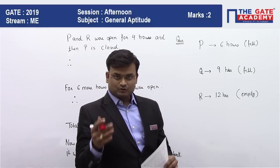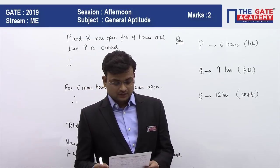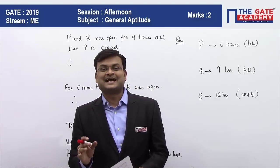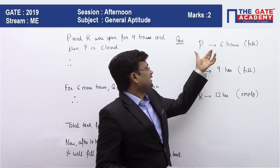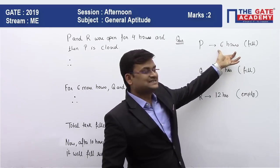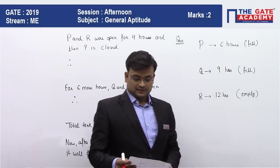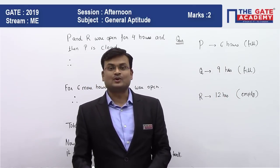We will be reading out the question and also noting all the data simultaneously. Two pipes P and Q can fill a tank in six hours and nine hours respectively. P can fill the full tank in six hours and Q can fill the full tank in nine hours. And R can empty the tank in twelve hours.